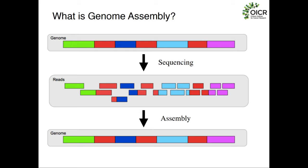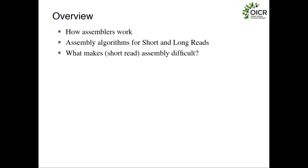We want to take our reads and figure out what the sequence of our genome was just from the sequence reads alone. What Matthew told you about is if you have a reference genome and can align reads to it, you can use that to call variation. We're in the world where either we don't have a reference genome or we don't want to use it. The first part of this talk will describe the theory behind genome assembly, how genome assemblers work, and then talk about assembly algorithms for both short read sequencing like Illumina and upcoming platforms like the Oxford Nanopore and PacBio instruments.